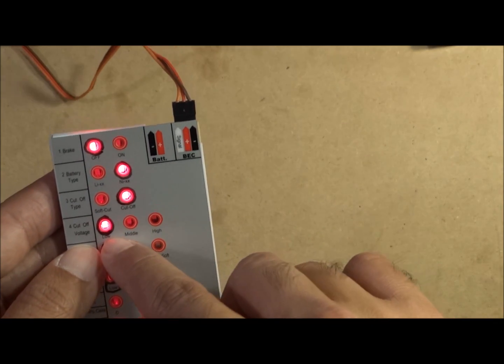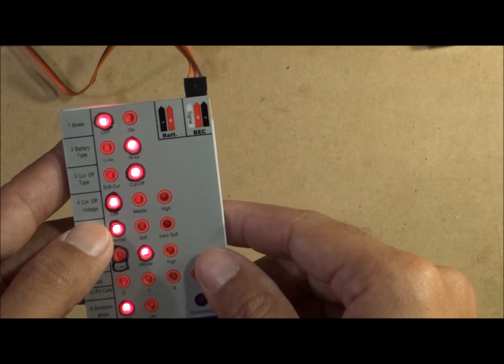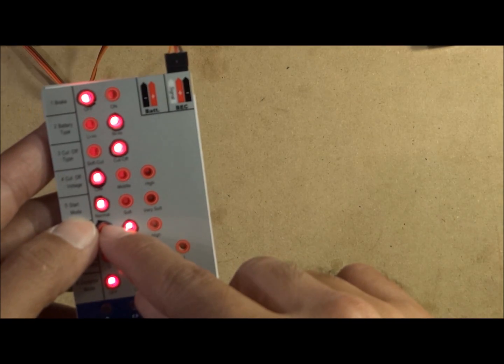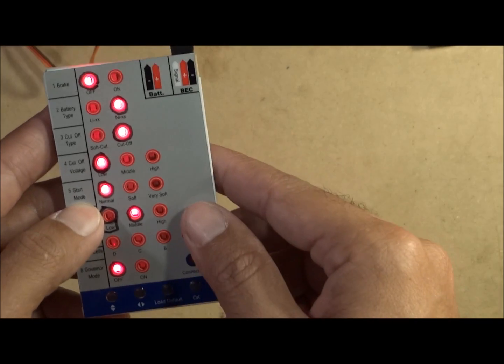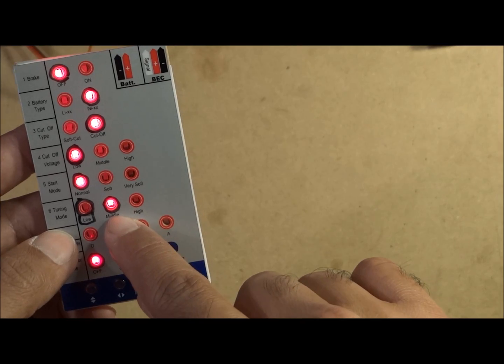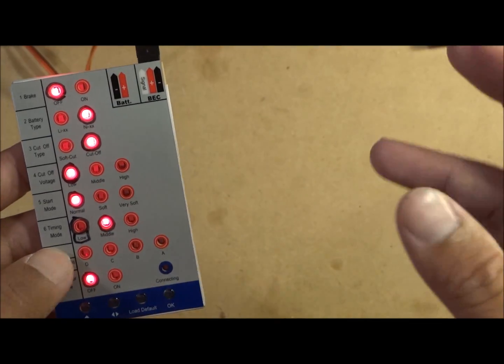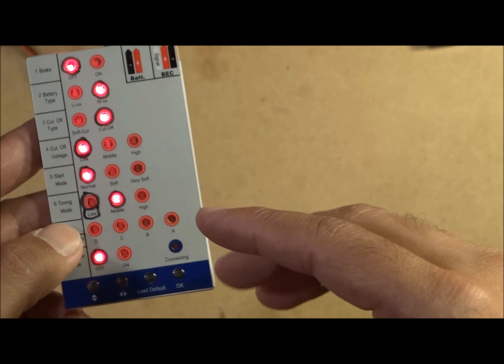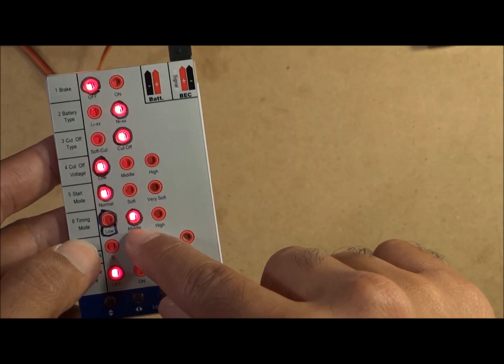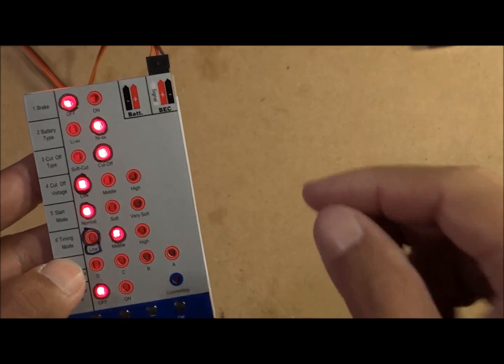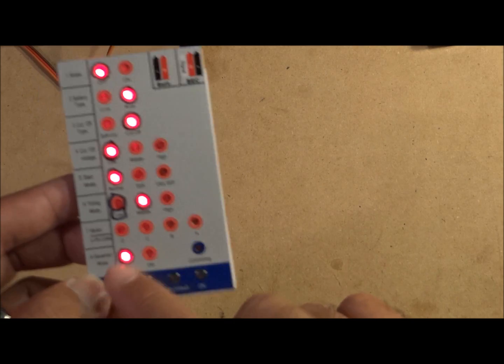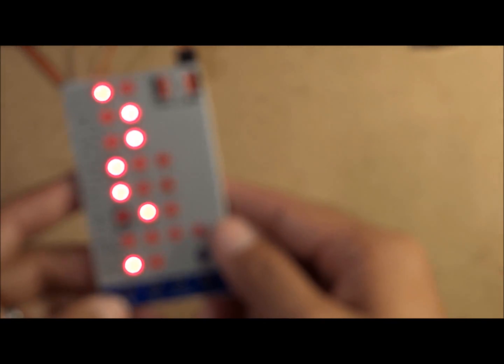Start mode - you could leave it at normal. I think you can get away with soft timing middle. Some ESCs you'd want to play with, but for the most part, most ESCs will be happy in middle timing. Sometimes low, but mostly middle. The governor - you'd want that off.